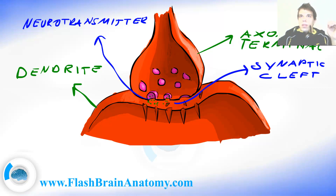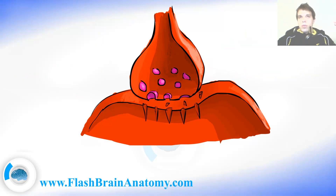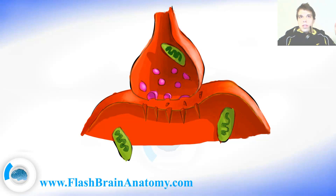On a dendrite, there are special receptors that receive these molecules. And that way the signal is being transported onto the dendrite and it goes further. In the axon and dendrite terminal, you can very often find the mitochondria, which is supposed to produce the energy for the cell.